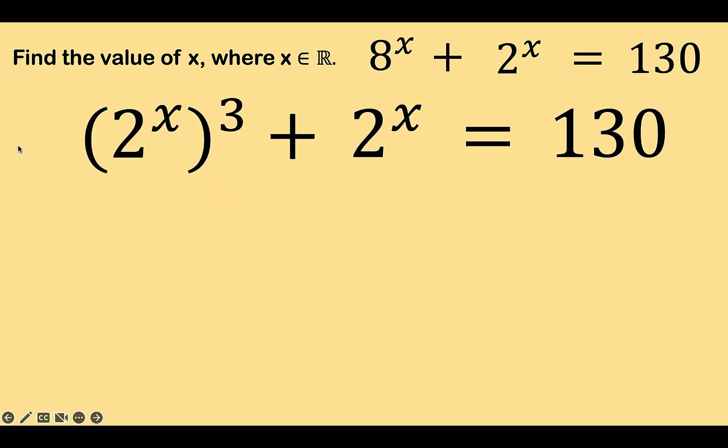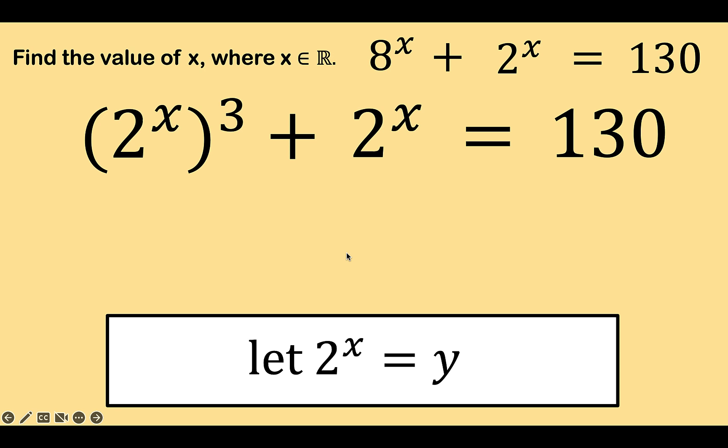Now notice that the base here is 2 raised to x. The exponent is 3. You can also think of this 2 raised to x as a base with an exponent of 1. Therefore, it would be simpler if we let 2 raised to x be equal to a certain variable. Let's use the variable y for this purpose. So if 2 raised to x is y, we can now replace by y this 2 raised to x to have y cubed, and do the same thing for 2 raised to x here.